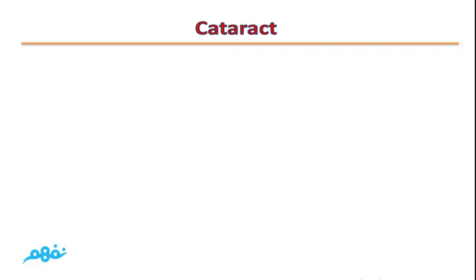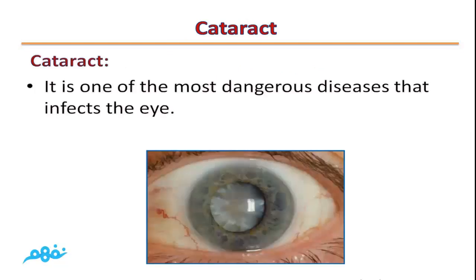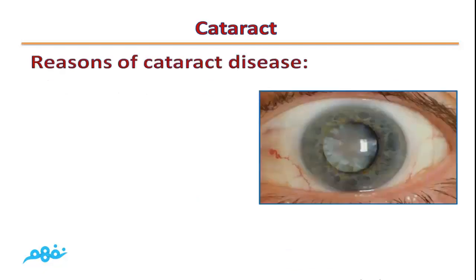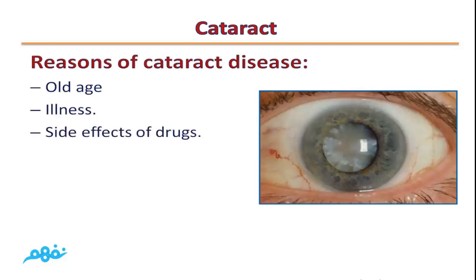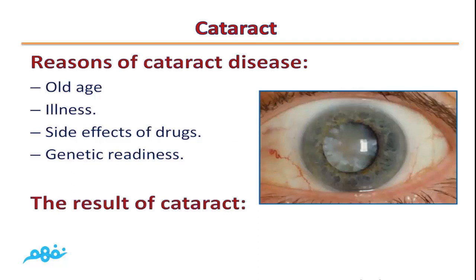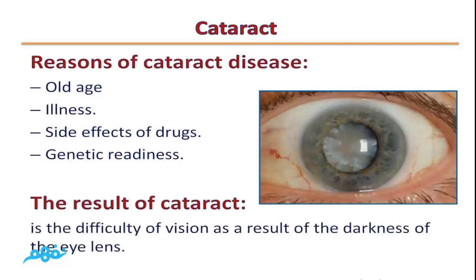The final vision defect is cataract, one of the most dangerous diseases that affects the eye. Causes include old age, illness, side effects of drugs, and genetic disorders. The result is difficulty in vision due to darkening of the eye lens. Cataract is treated through surgery by replacing the eye's natural lens with a convex plastic lens.